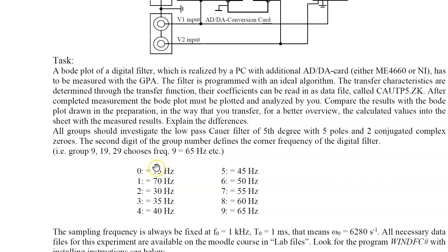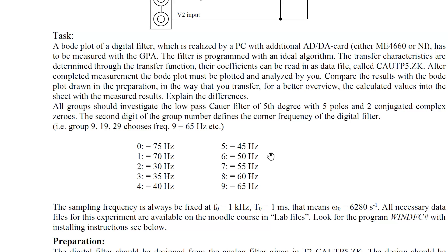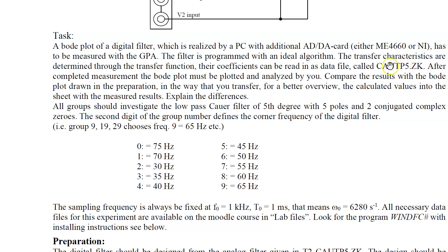The corner frequency of the digital filter you measure depends on your group number. With six persons, group numbers go from one to six: the first student has 70 Hz corner, the second has 30 Hz, and so on, so all have different digital filters and get different measurements. The conversion of the analog filter is given as a ZK file with the time constants of the analog filter version. You can read this into the WinDFC# tool and then convert it with a special frequency — selecting a sampling time for the conversion.